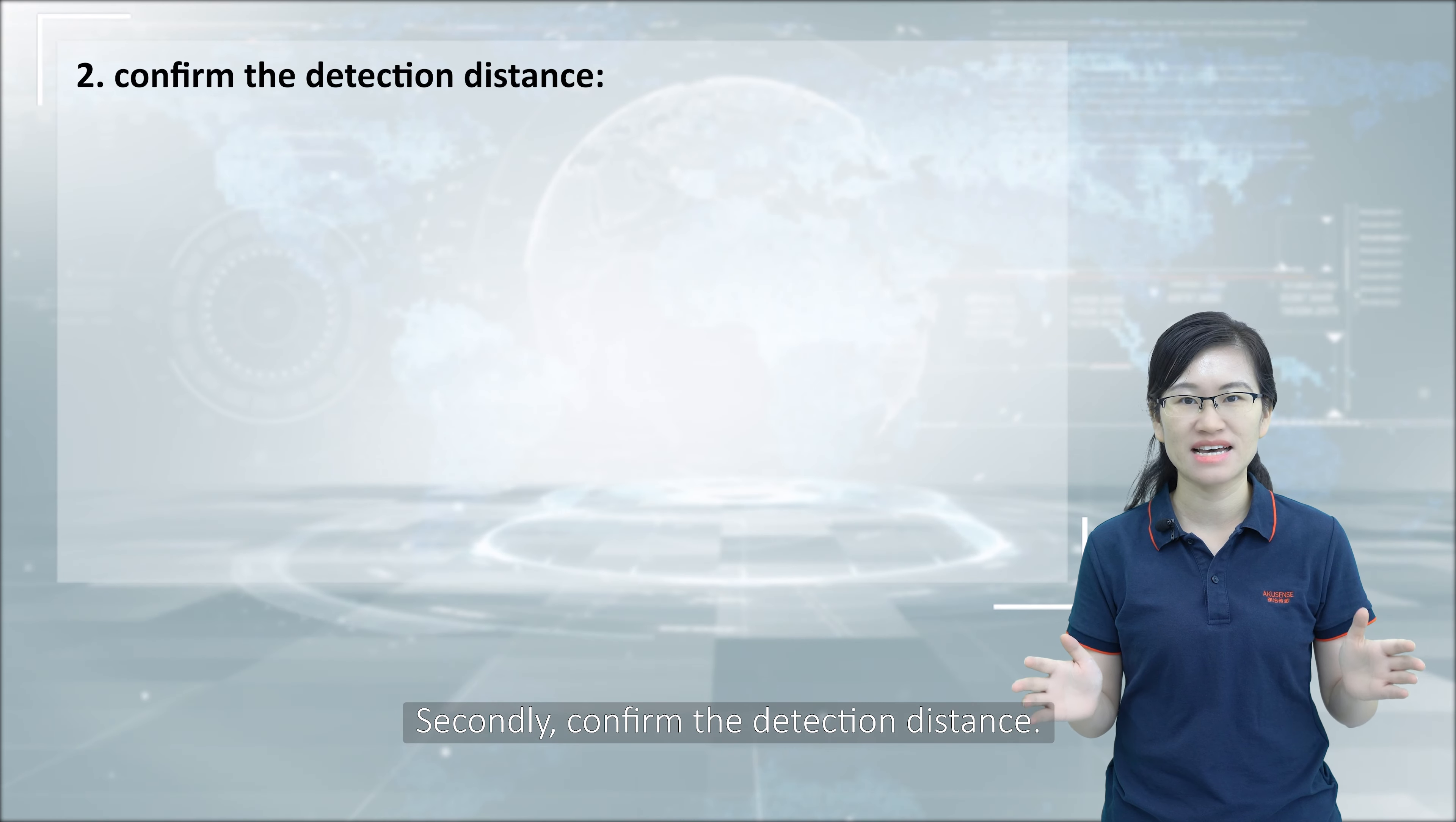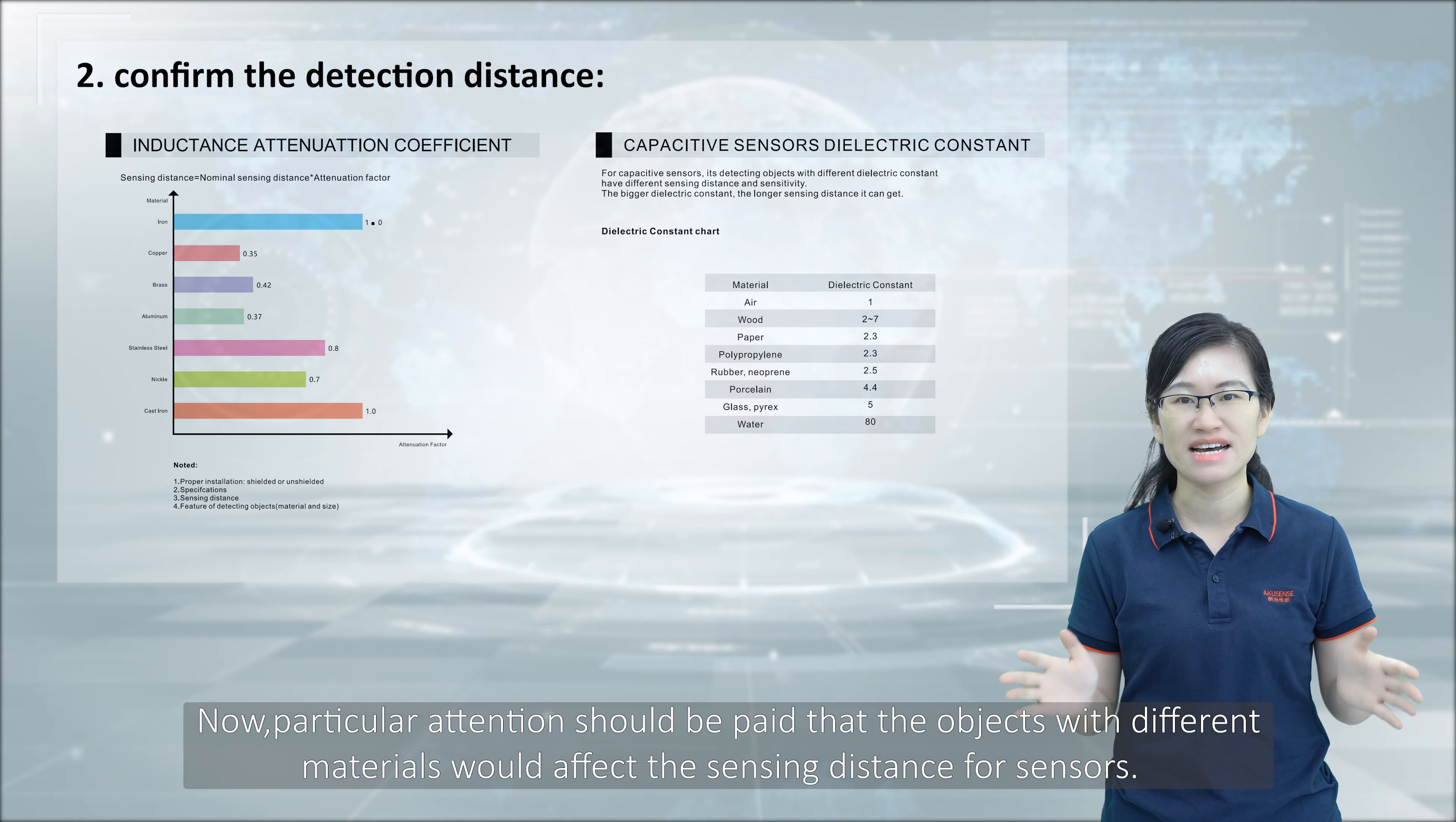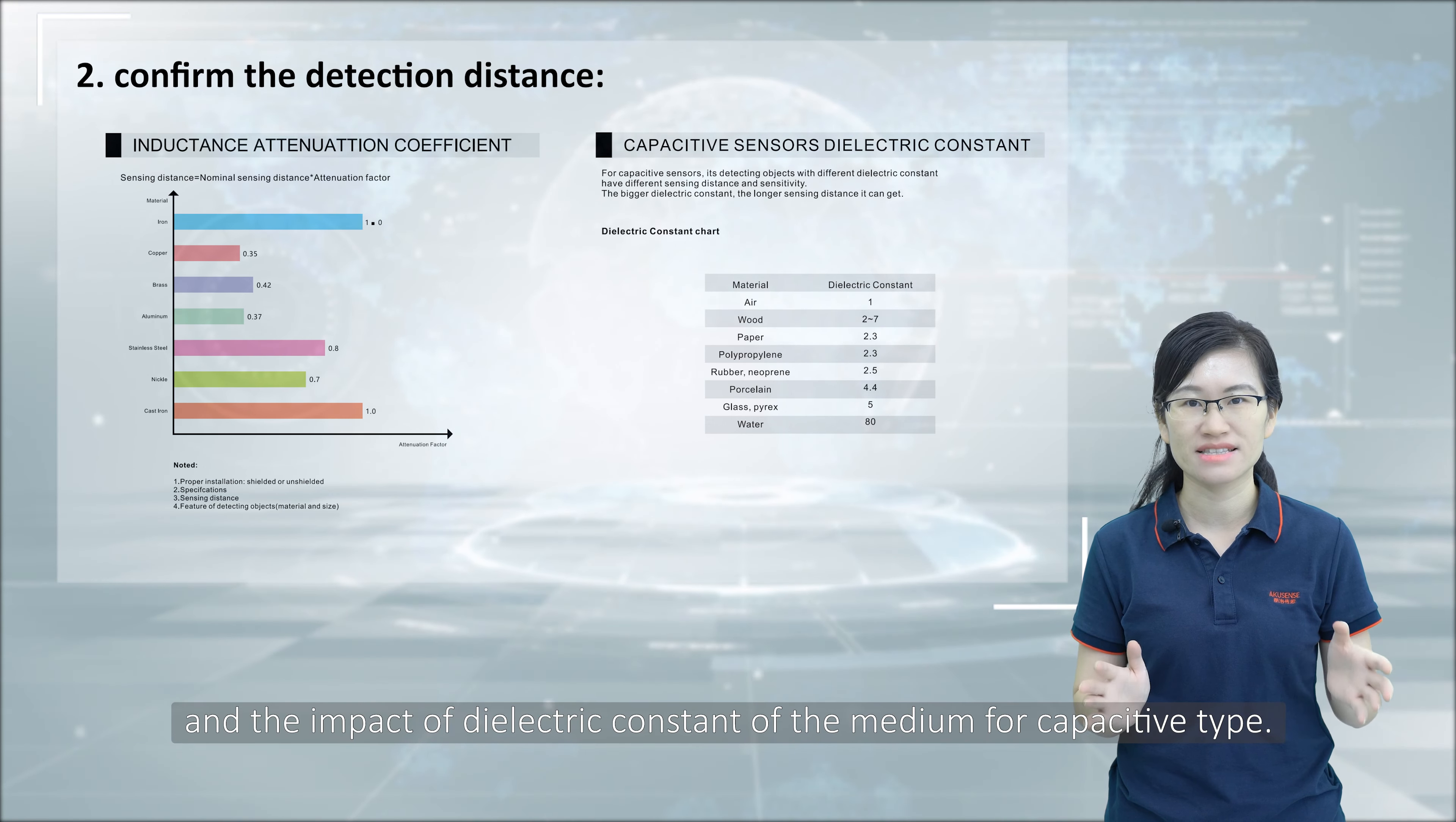Secondly, confirm the detecting distance. It's quite necessary to choose the sensors with reasonable range on the basis of the requirement for sensing distance. Particular attention should be paid that objects with different materials would affect sensing distance for sensors, such as the attenuation factor of metal materials for inductive type and the impact of dielectric constant of material for capacitive type.